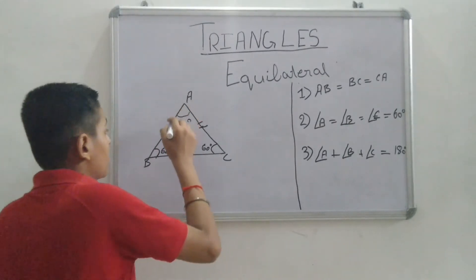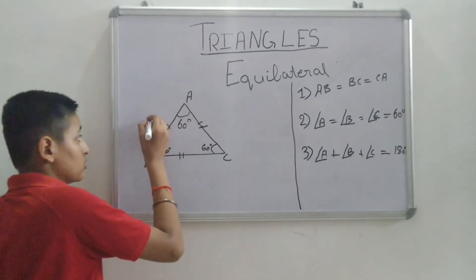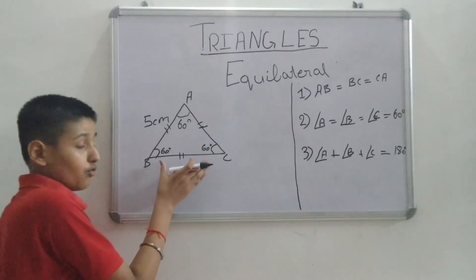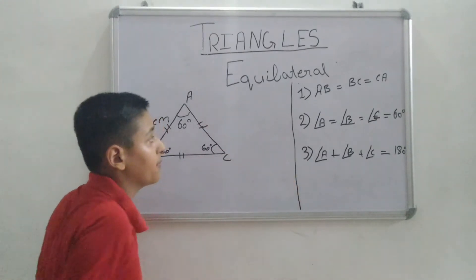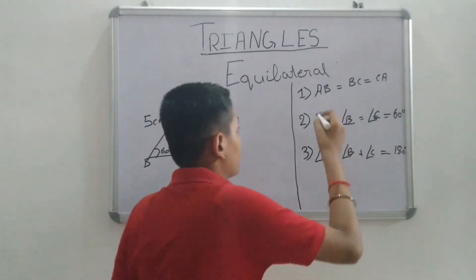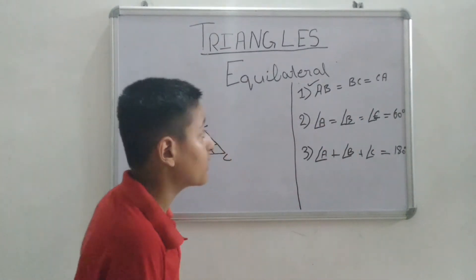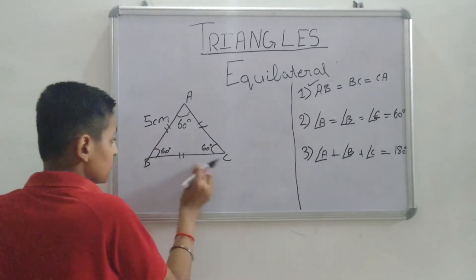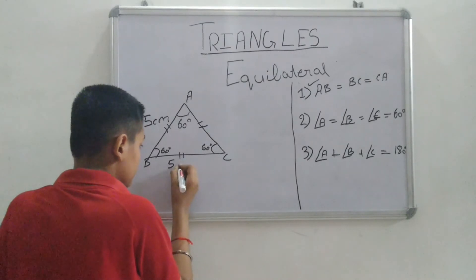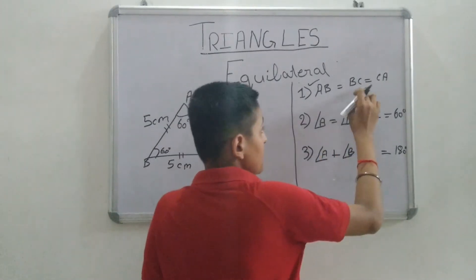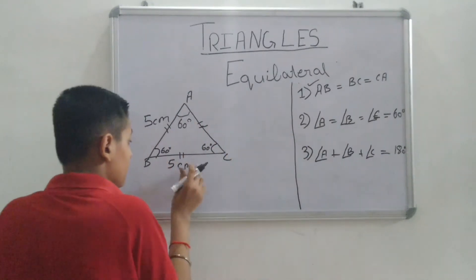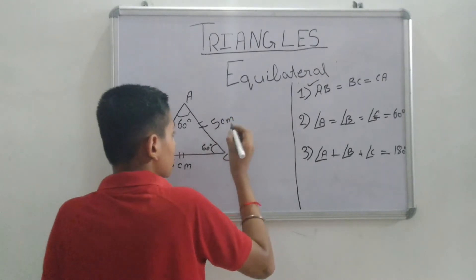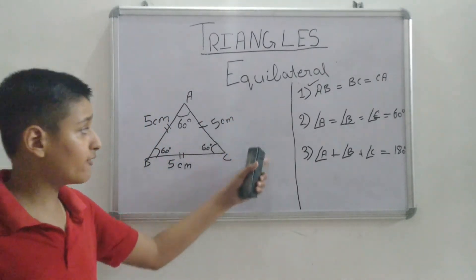Let's take an example. If AB equals 5 cm, then let's find the length of BC and CA. We will use the first property: AB equals BC, so the length of BC is also 5 cm. And BC equals CA, so this side is also 5 cm. This is an equilateral triangle.